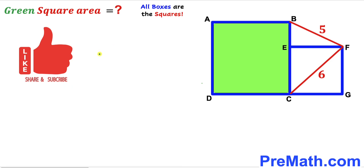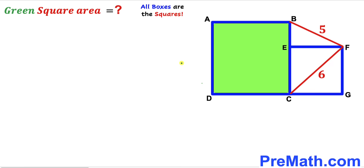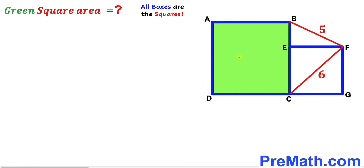Please don't forget to give a thumbs up and subscribe. Keep in mind that this figure may not be 100% true to scale. Both of these shapes are squares, so all side lengths of the green square are equal, and likewise the side lengths of the smaller square are equal. If I label this side length as lowercase a, then all sides are lowercase a across the board.